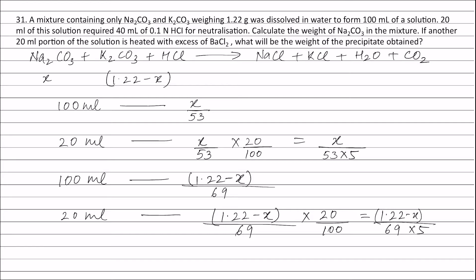Since both sodium carbonate and potassium carbonate react with HCl, equivalents of sodium carbonate plus equivalents of potassium carbonate will be equal to equivalents of HCl.